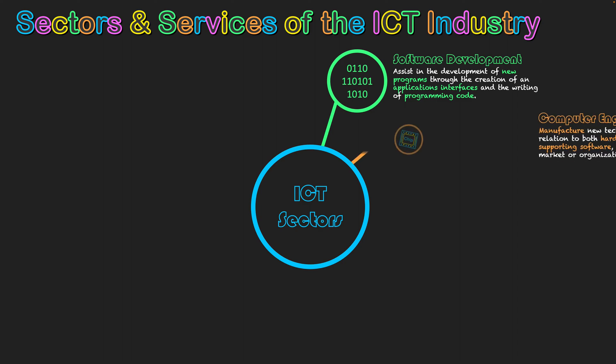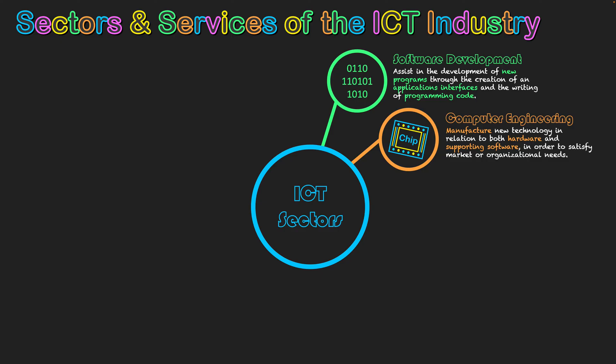Very similar to this is computer science, where individuals manufacture new technology in relation to hardware and supporting software. They would interact with software developers to create the software side, or may do some software development themselves, but the focus is also on the physical technology — putting in chips and adding different hardware components to create new physical technology in order to satisfy market or organizational needs.